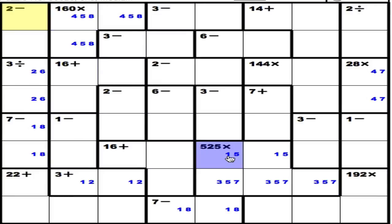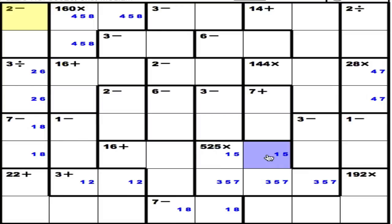This one was particularly interesting. Whenever you see a number end in 25, 50, 75, or double zero, that means there are two 5s in that particular multiplication problem. So if I put the first 5 into it — 5 into 125 — I'm left with 105. And if I put the second 5 into that 105, I'm left with 21, which is 3 times 7. They'll both have a 5 in them. One will be 3, 5, and 7. One will be 1 and 5. And the reason why I know the 1 and 5 go up here is because the 1 and 2 are already here. So 1 and 5 there, 3, 5, 7 there.